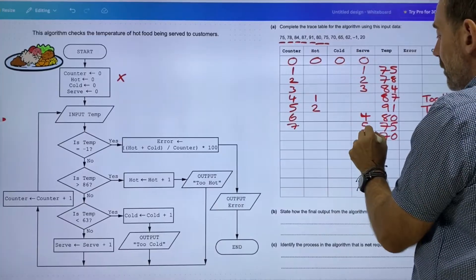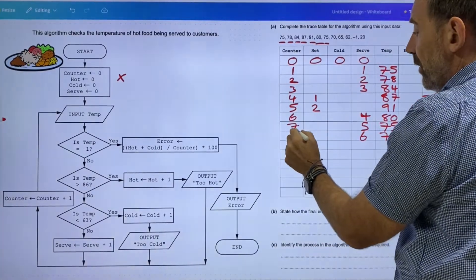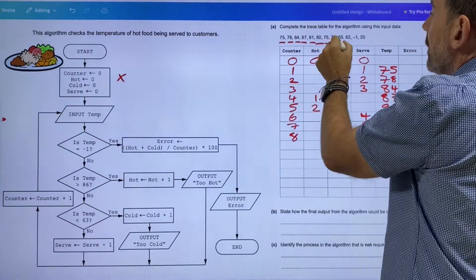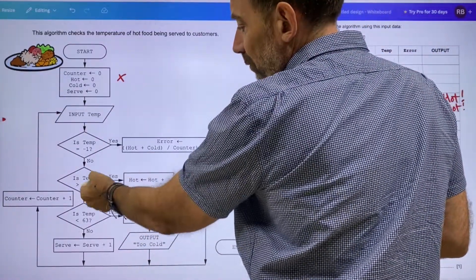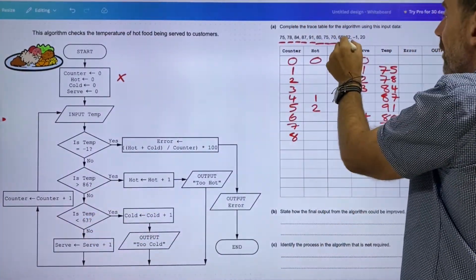Counter equals counter plus one. Input the temperature, so we're now on 75. 75 is going to be a good number—it fits in between this sort of range here, so I can set myself to five. Come back around to seven. Now I've got 70, exactly the same. We'll serve another dish, so that's eight. 65 again—seven.